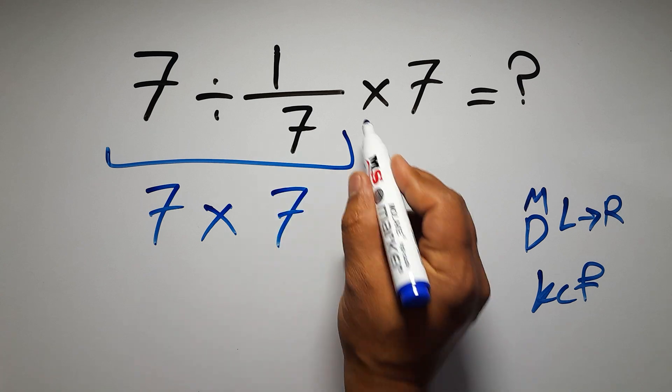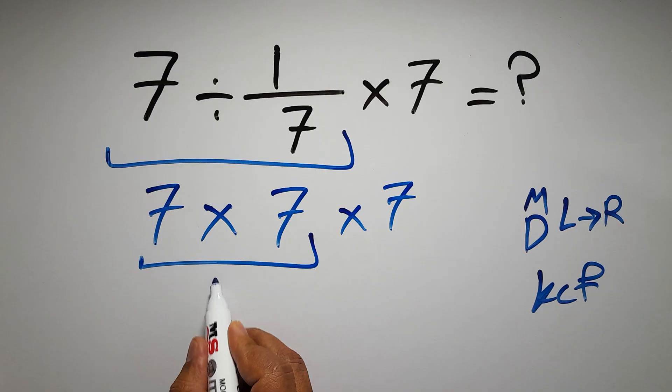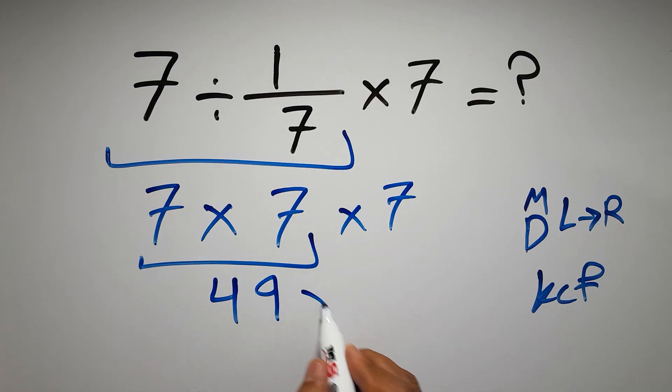And again here we have times seven. So seven times seven is just 49. 49 times seven: